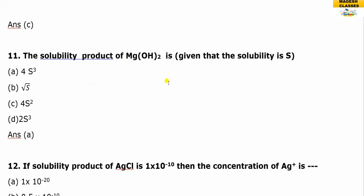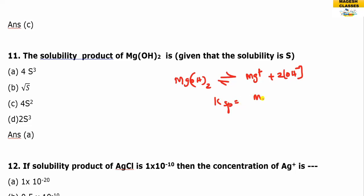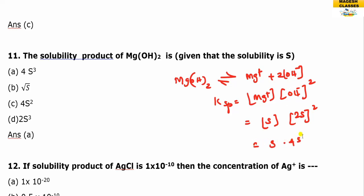For Mg(OH)₂, it ionizes to give Mg²⁺ and 2 OH⁻ ions. So Ksp equals [Mg²⁺][OH⁻]². The solubility of Mg²⁺ is S and that of OH⁻ is 2S, so Ksp = S × (2S)² = 4S³.